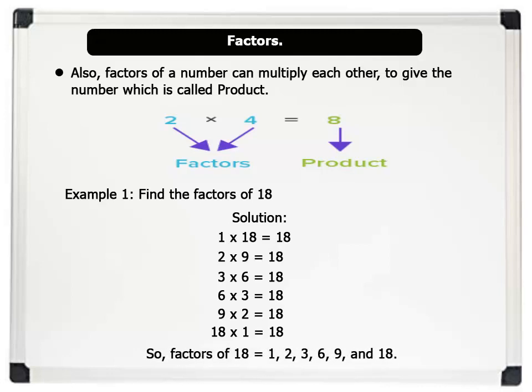So, factors of the number 18 equals 1, 2, 3, 6, 9, and 18. That's brilliant.